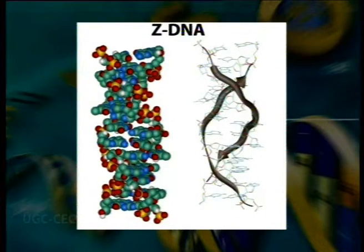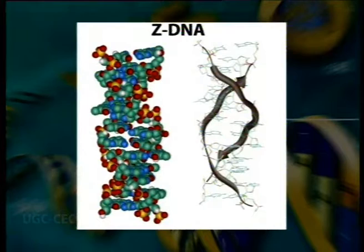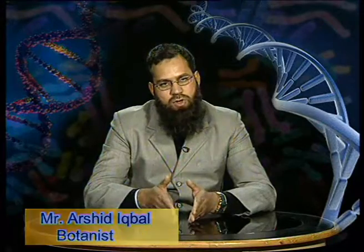As far as Z-DNA is concerned, it is even more different from B-DNA. There are no grooves and the helix shows left-handed coiling. There are 12 base pairs per helical turn with a rise of 0.38 nanometers per base pair. In Z-DNA, the sugar-phosphate backbone follows a zig-zagged path, giving it the name Z-DNA. I hope you have understood the physical and chemical nature of DNA, and the features that enable this macromolecule to transmit genetic information from one generation to another. Thank you very much.